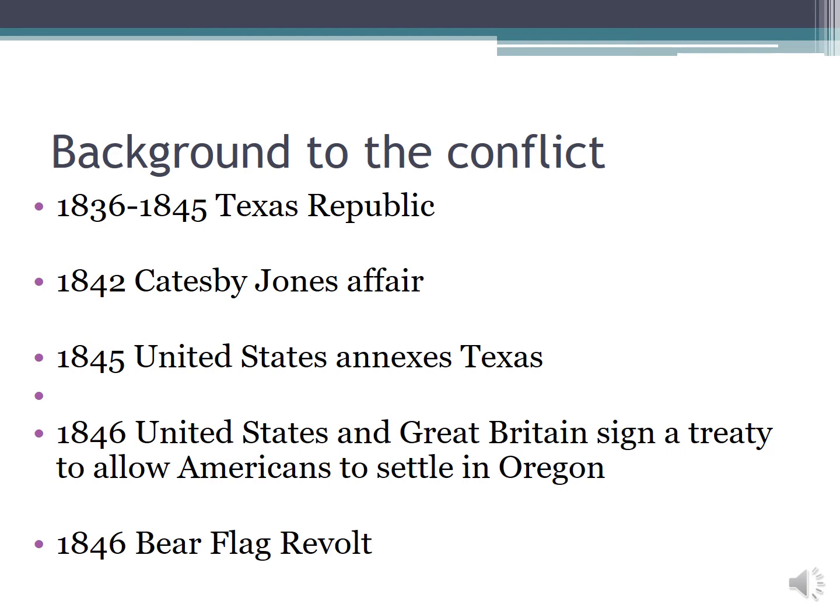The Catsby Jones Affair proved to the Californios what the Americans were planning, and so you started to get this discussion among the Californios in the 1840s: what are we going to do if the Americans come in and want to annex our state? That set off a series of discussions. As I mentioned in the last lecture, some Californios said 'no problem, let's become part of the United States,' while others said no — and that was going to create a division.